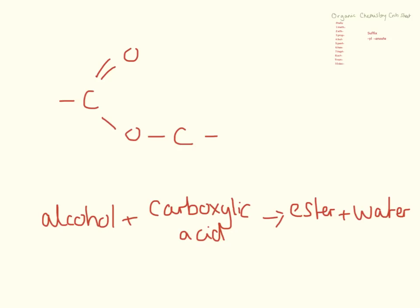Esters are formed by the combination of an alcohol and a carboxylic acid, and this produces an ester and water. This is the functional group you're looking for with an ester — it's actually in the middle of a molecule, so it's slightly tricky to spot. If you can't find an alcohol group or carboxylic acid group on the end, look for an ester group in the middle.